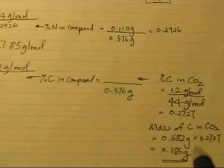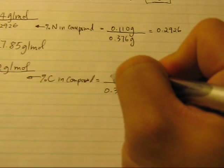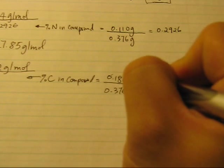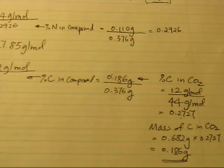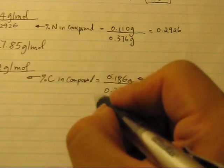Now this is the mass coming from CO2, and this is also the mass of carbon coming from the compound. So we can put this into here, and then we calculate this.